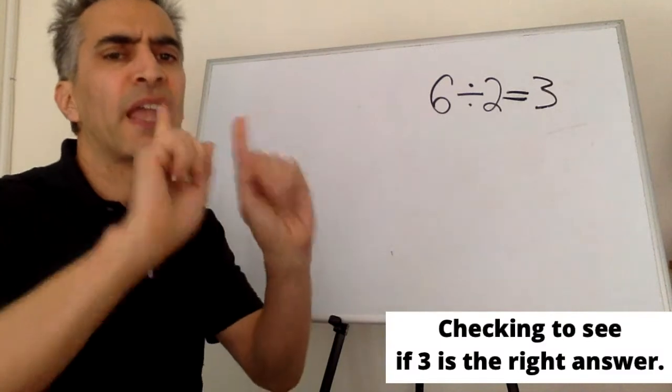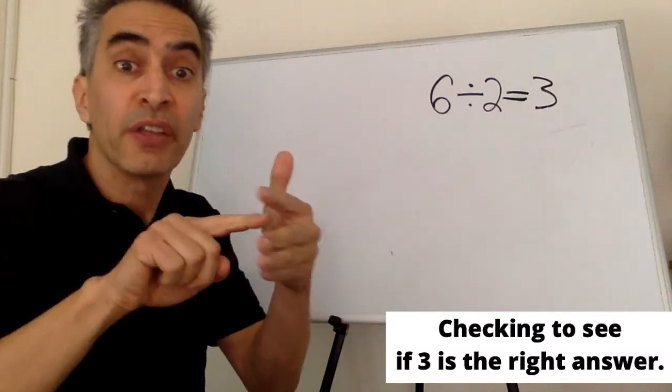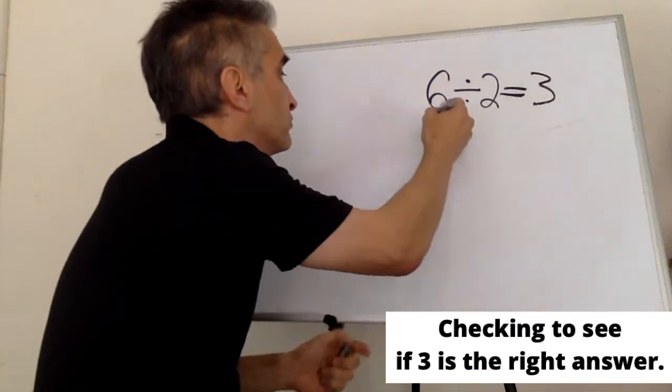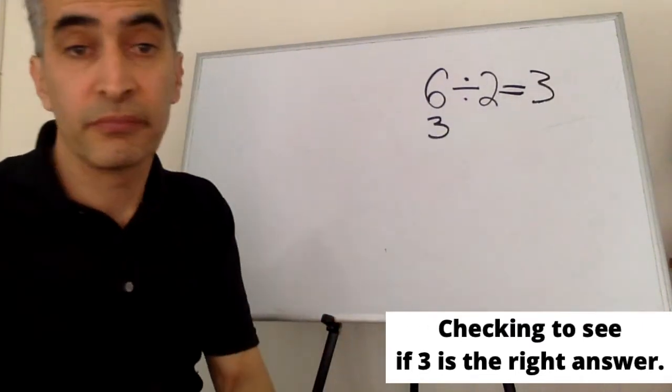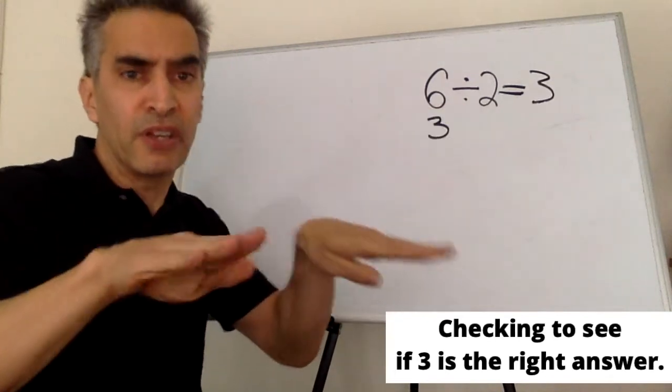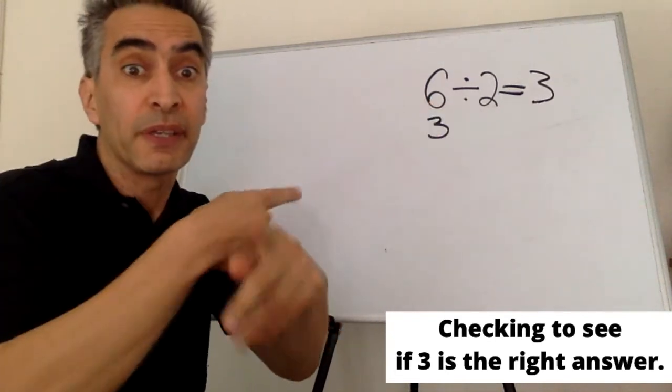Next, we check the answer. But how? We start with three. Next, the opposite of division is multiplication.